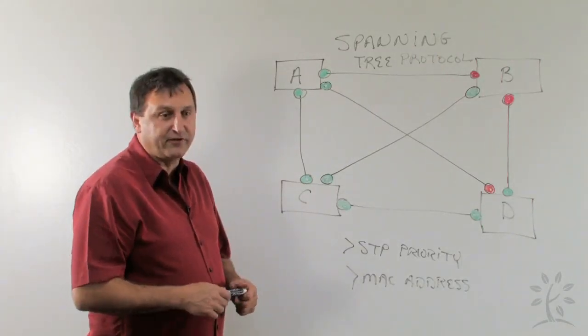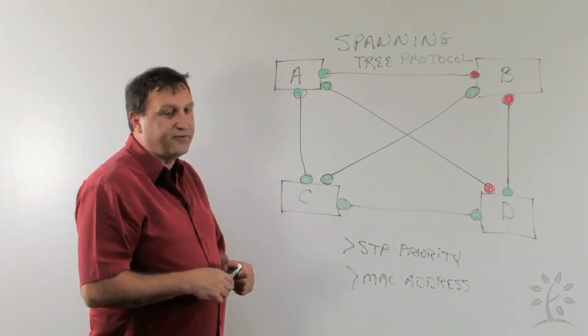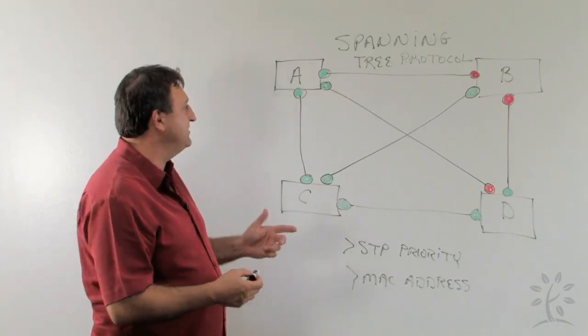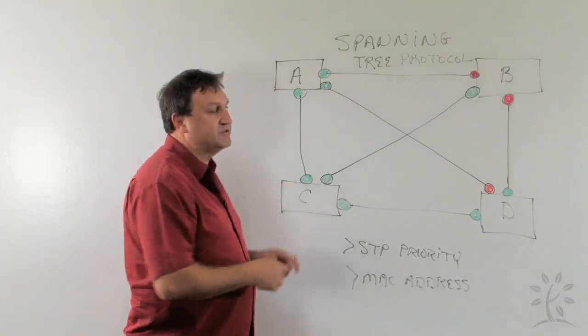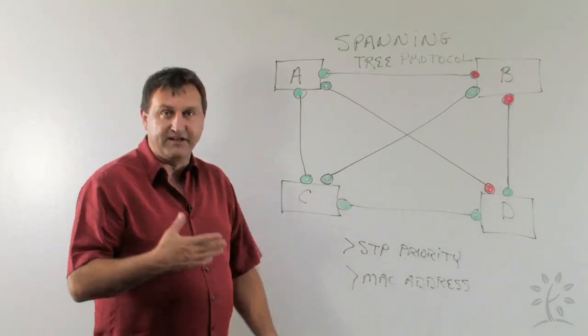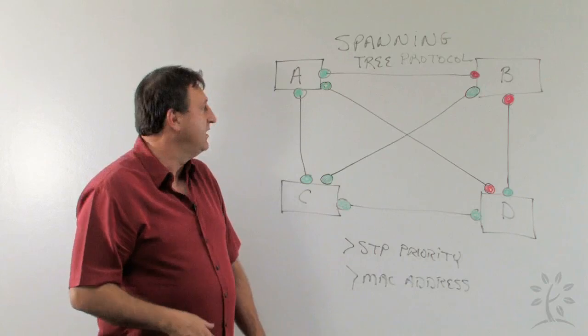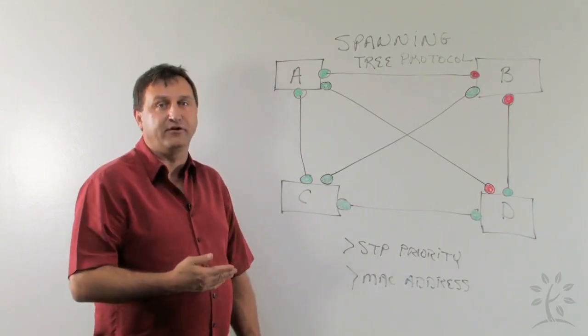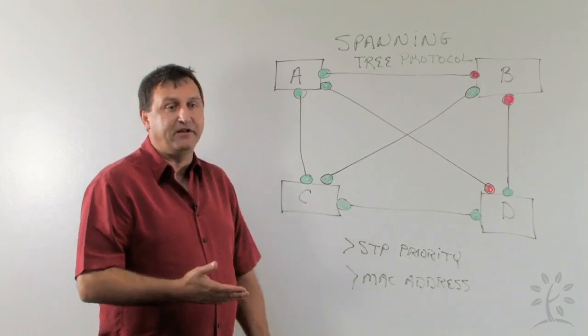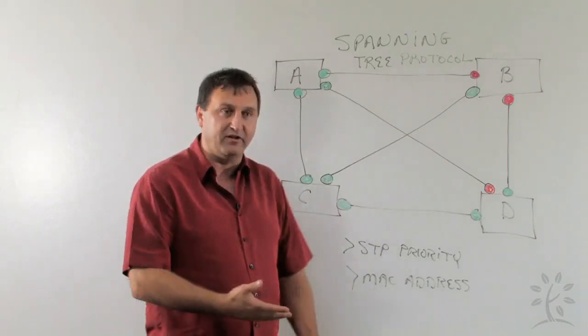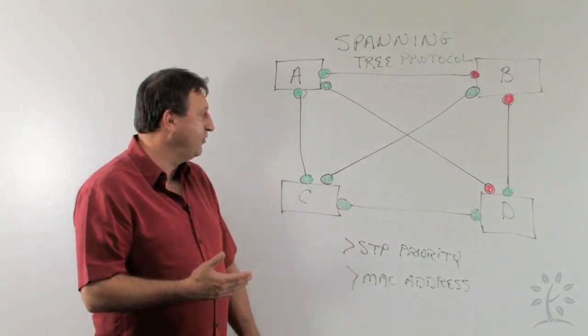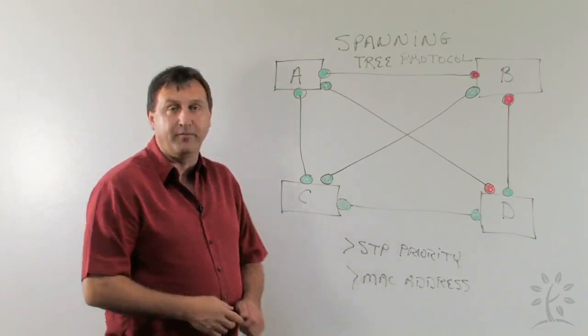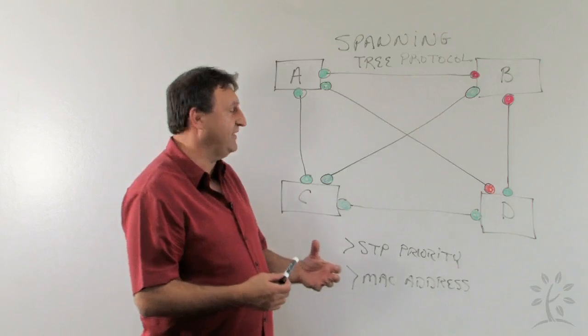The second thing that Spanning Tree does for us is it allows for us to have redundancy. So there are many times you're going to want to take a switch and have multiple connections from one switch to another, which would result in a switching loop. But in this case, what it's going to do is automatically open that connection and prevent that loop from happening. Now if we have a failure somewhere along the line, the Spanning Tree Protocol will go in and heal that connection and provide that redundant connection so that we're up back and running.